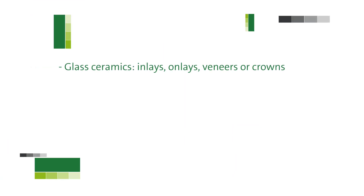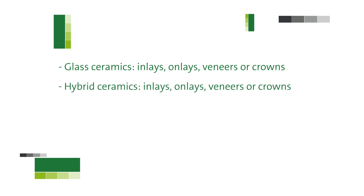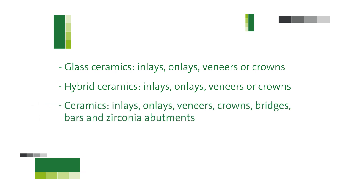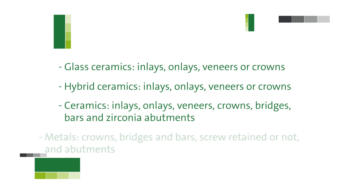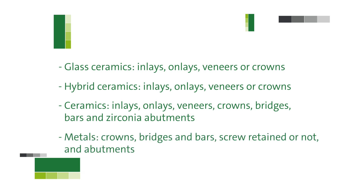So which materials should you have in your clinic? Glass ceramics such as NICE and D-MAX for inlays, onlays, veneers or crowns. Hybrid ceramics such as Lava or Vita for inlays, onlays, veneers and crowns too. Ceramics for the same applications, plus bridges, bars and zirconium abutments. Then we have metal — crowns, bridges and bars, screw retained or not, and abutments.